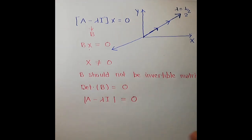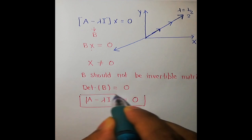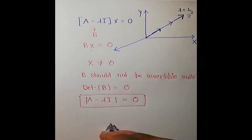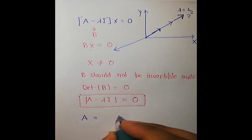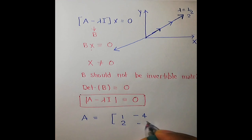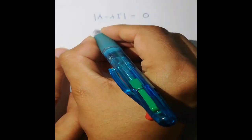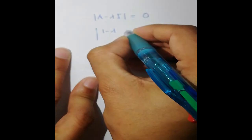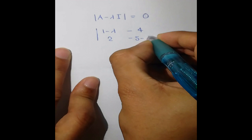Let's take an example. Suppose matrix A is given by [[1, 2], [-4, -5]]. We calculate A - λI, which gives us [[1-λ, 2], [-4, -5-λ]].